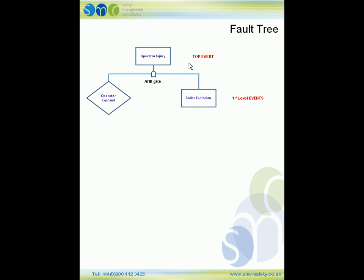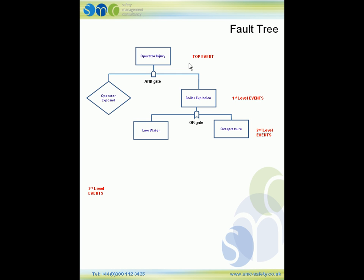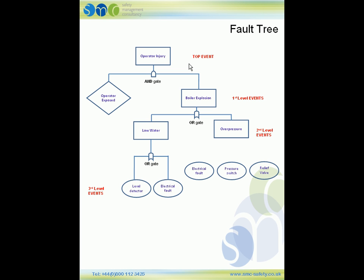Next we look at the events below the boiler explosion, which are the second level events. From the question, the boiler could explode due to either low water condition A or over pressure condition B. Because it could be either of these, we use an OR gate. For condition B, there are three conditions: the electrical fault, the pressure switch, or the relief valve — and again, because it could be any of these, that is also an OR gate.